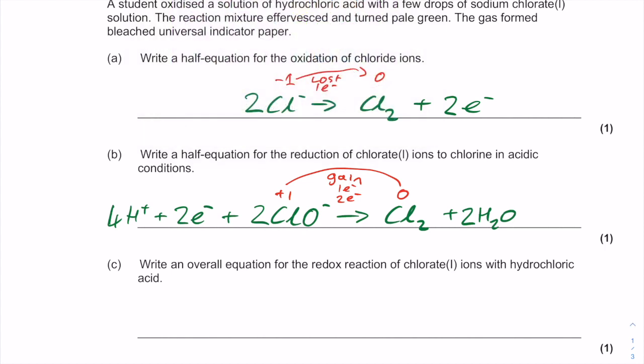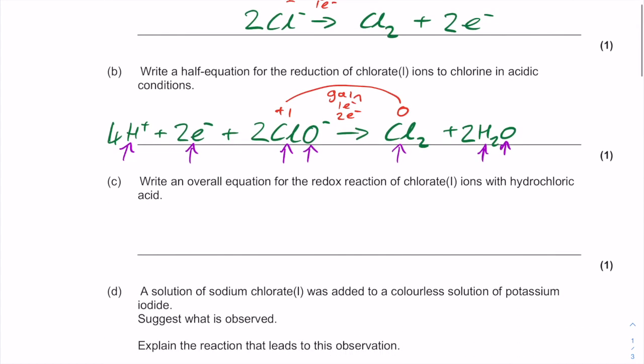We've got 2 H₂O so we need to have 4 H⁺ on this side. So we'll just check that and go over it in a little bit more detail. The hydrogens here are matching with the hydrogens in the water on this side. The electrons are combining with these chlorates to form this chlorine and this oxygen here is forming the oxygen in the water. Now if we look down, we've got to write an overall equation for the redox reaction of chlorate ions with hydrochloric acid.